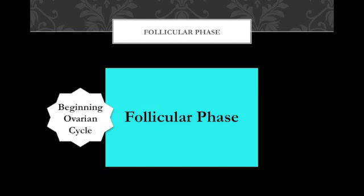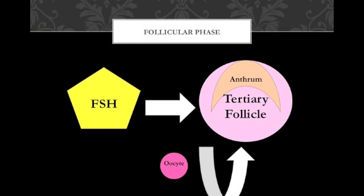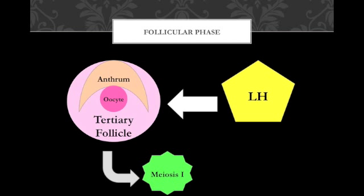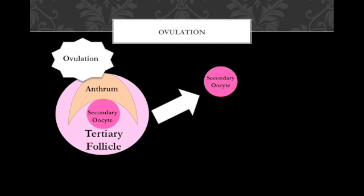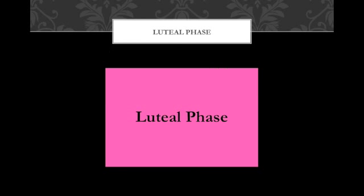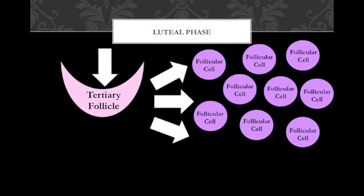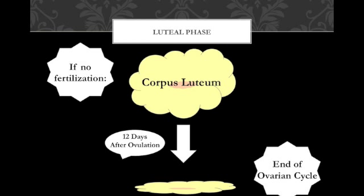The follicular phase begins at the start of the ovarian cycle. During the cycle, FSH stimulates the formation of the tertiary follicle and the oocyte projects into the antrum of the follicle. LH prompts the primary oocyte to complete meiosis 1 and produces a secondary oocyte which begins meiosis 2, but only if fertilization occurs. At ovulation, the tertiary follicle releases the secondary oocyte into the pelvic cavity where it is swept into the uterine tube. The luteal phase begins at ovulation. The follicle collapses and the follicular cells multiply, creating the corpus luteum which releases progesterone. Unless fertilization occurs, the corpus luteum degenerates usually 12 days after ovulation, marking the end of the ovarian cycle.